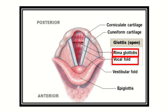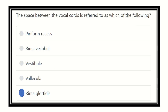So our answer is now ready: the space between the two vocal cords, or vocal folds, is the rima glottis. This is very important because air enters through the rima glottis, which is the space between the two vocal cords. Thank you.